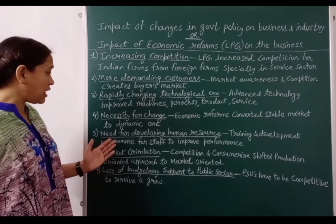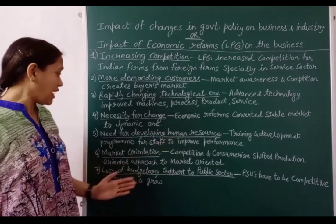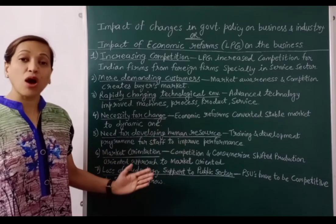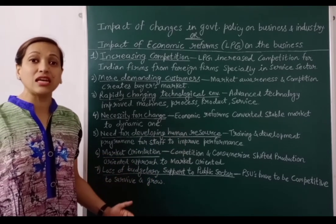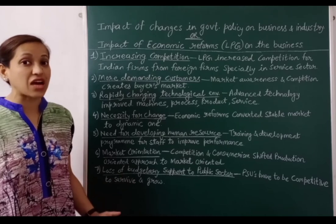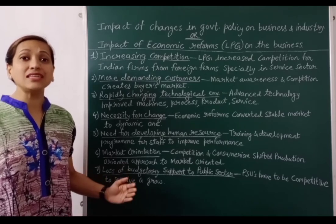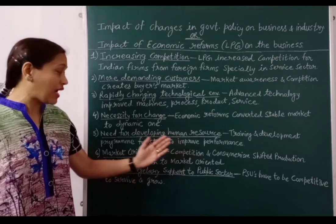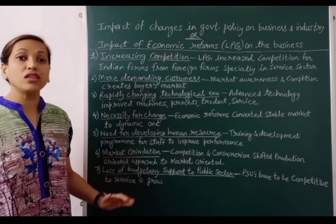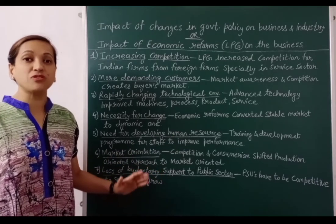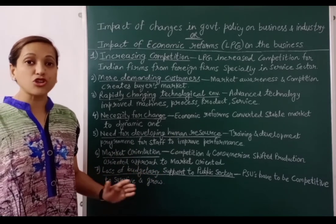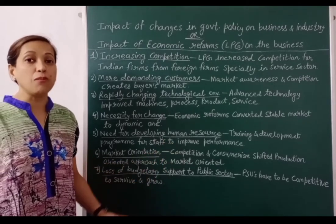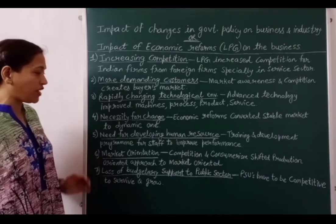The fifth impact is the need for developing human resources. Training and development programs for staff are needed to improve performance. Before economic reforms, India had more semi-skilled and unskilled workers. But now there is a need for trained staff. Organizations started organizing training and development programs, on-the-job and off-the-job training programs, workshops and seminars, so that workers' performance and productivity could improve.